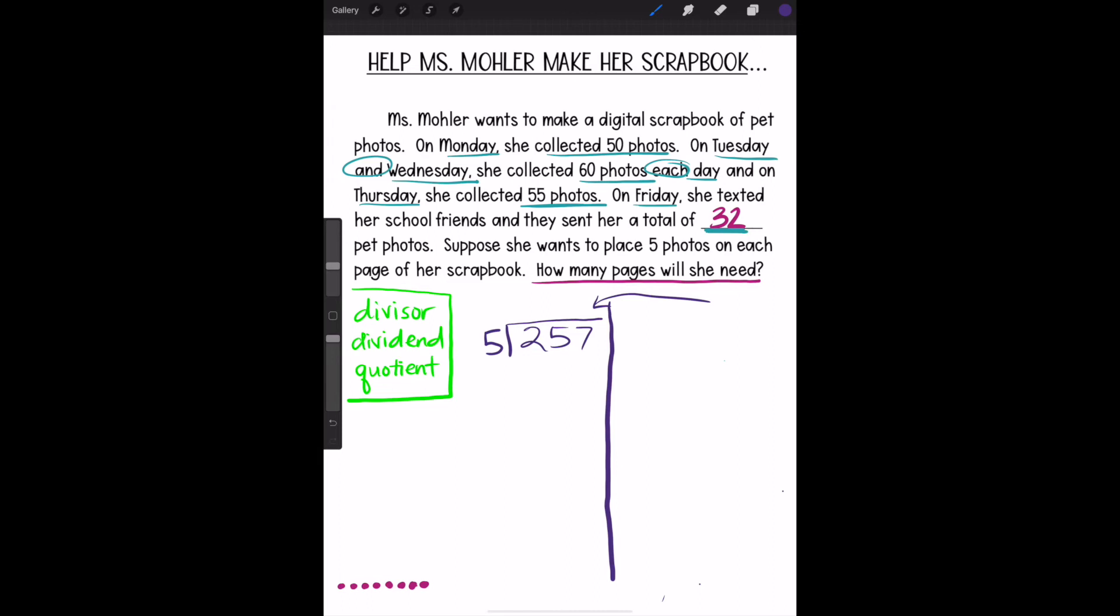All right. So we need to start to divide. And we have to think to ourselves, what is 257 divided by 5? So I am thinking to myself, how many groups of 5 are there in 257? Now, in using partial quotients, I can think of smaller numbers if that helps me out. So I might think to myself, I might start with a 10. Would 10 groups of 5 give me 257? Well, it would certainly give me 50. So I might want to try a bigger number. So let's double that and try 20. So 20 times 5 would give me 100.